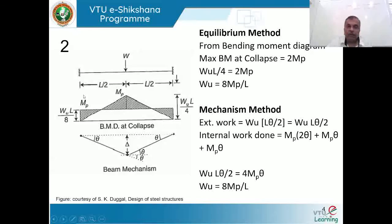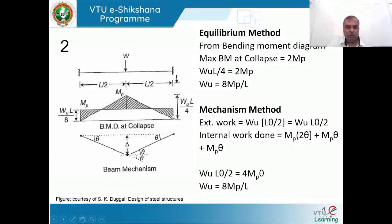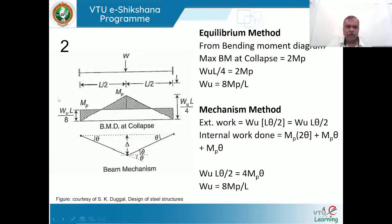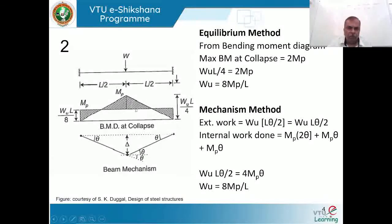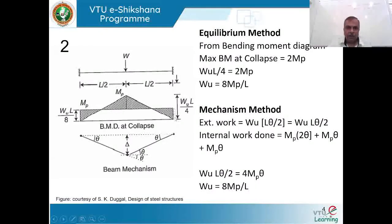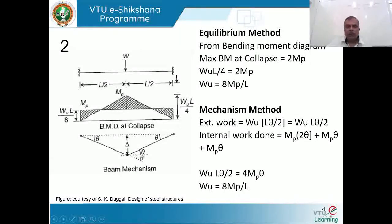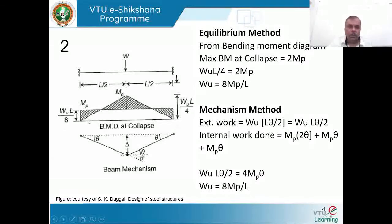Using the static method, two fundamental conditions are satisfied: the equation of equilibrium, and the condition that the bending moment anywhere along the span is at most equal to mp and less at all other sections. The positive moment equals mp at the center and is less elsewhere; the negative moment equals mp at the ends and is less at other sections.